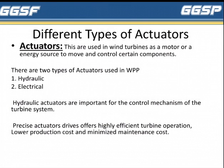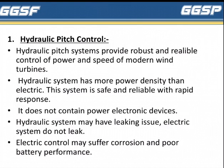There are different types of actuators. Actuators are used in wind turbines as a motor or energy source to move and control certain components. There are two types of actuators in wind power plants: Hydraulic and Electrical. Hydraulic actuators are important for the control mechanism of the turbine system. Precise actuator drives offer highly efficient turbine operation, lower production cost, and minimized maintenance cost.